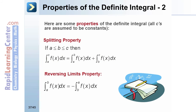Reversing limits property: the integral from a to b of f of x is equal to the negative of the integral from b to a of f of x.